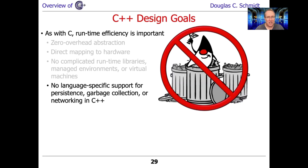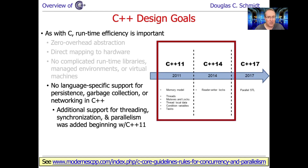C++ lacks built-in language support for persistence, garbage collection, and networking — and that's deliberate, keeping the language lean and mean. There is now support for threading, synchronization, and parallelism: starting in C++11 they added threads and synchronizers like mutexes and condition variables; C++14 added reader-writer locks; and C++17 added parallel STL containers. Notice that these enhancements have been added as library features, not core language changes. There's no built-in thread or built-in synchronizer in C++ the way there is in Java.